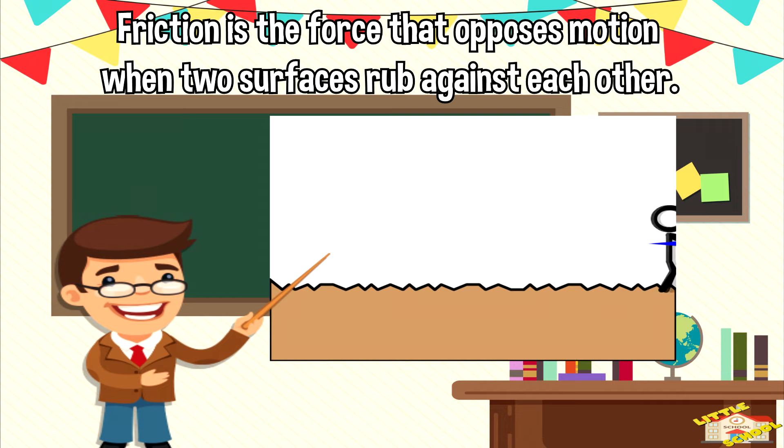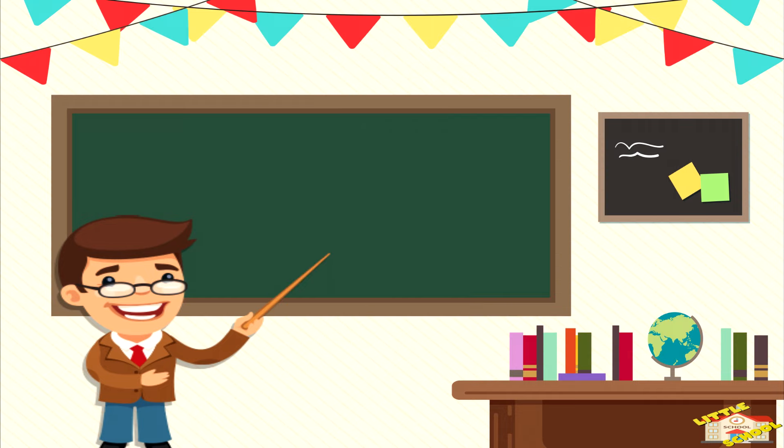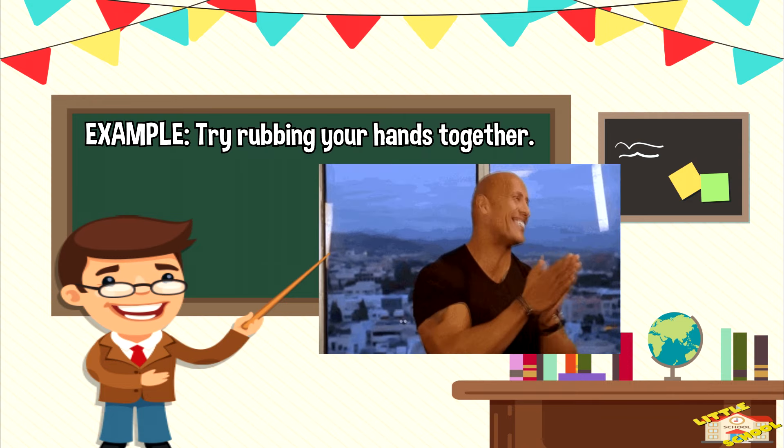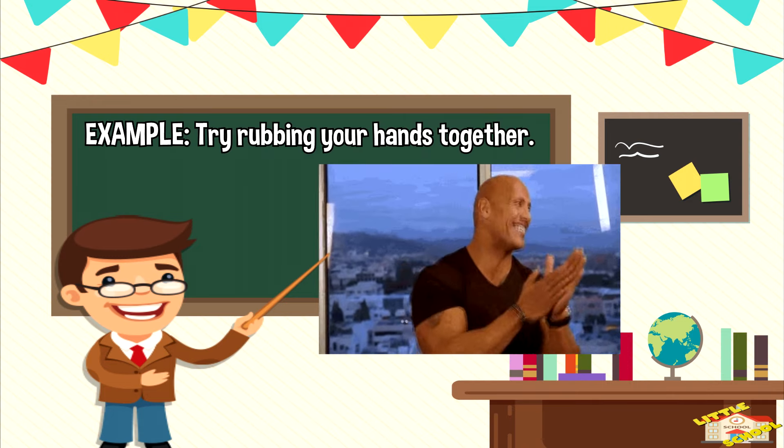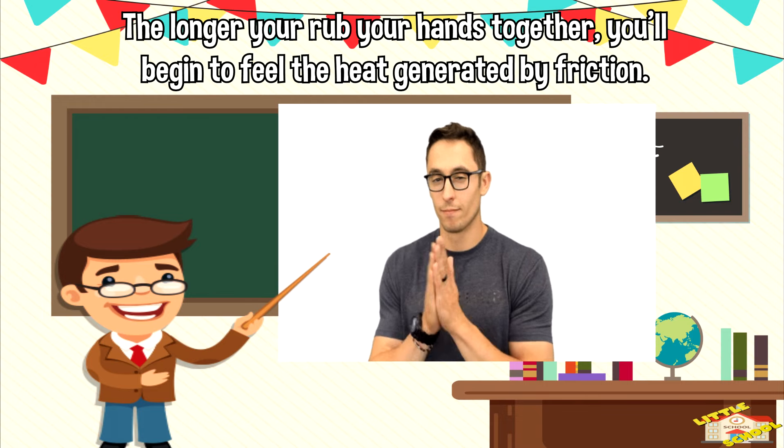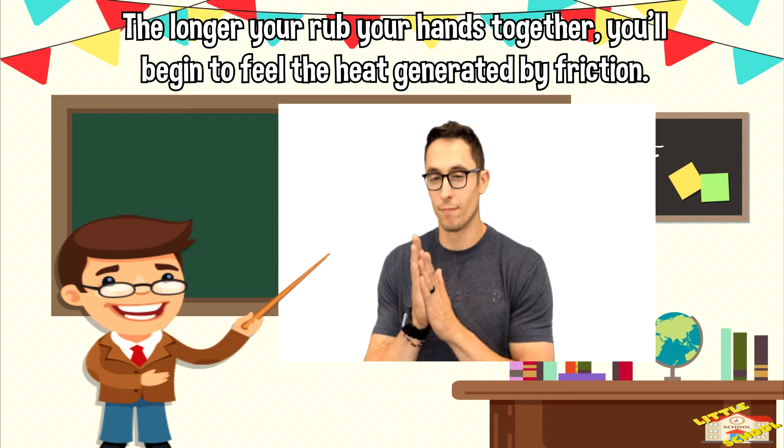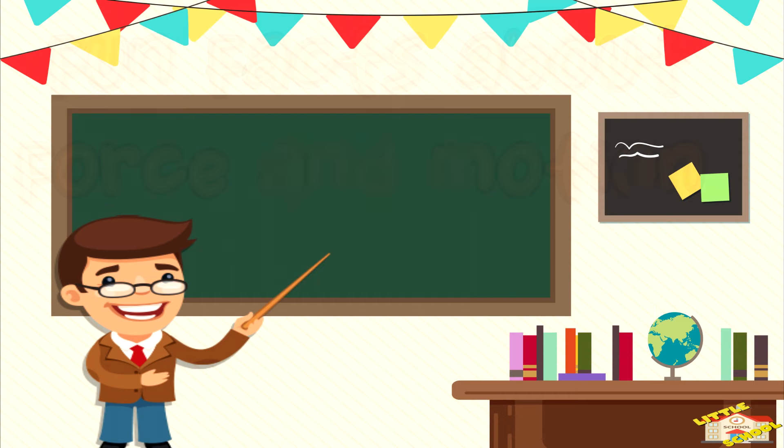What is friction? Friction is the force that opposes motion when two surfaces rub against each other. Here's a great way to observe friction: try rubbing your hands together. The longer you rub your hands together, you'll begin to feel the heat generated by friction.